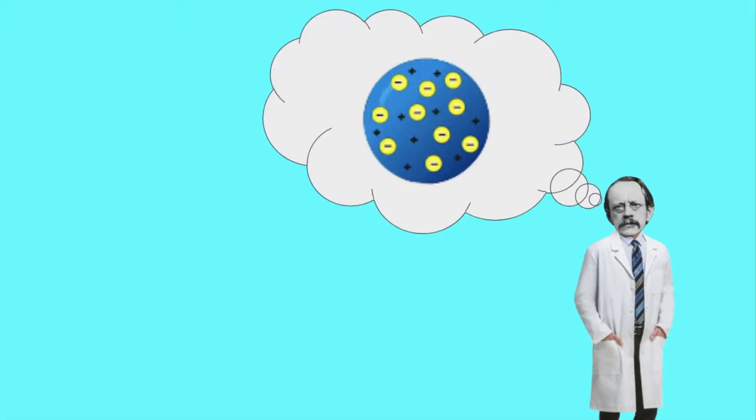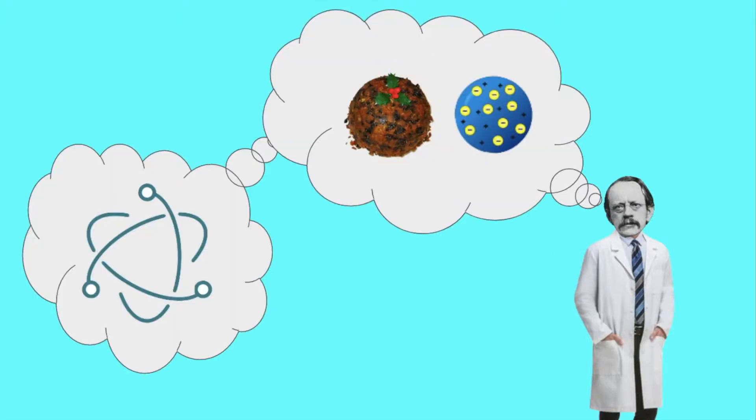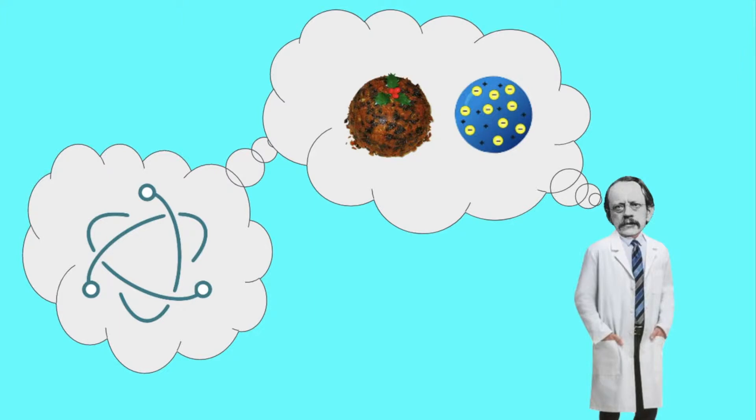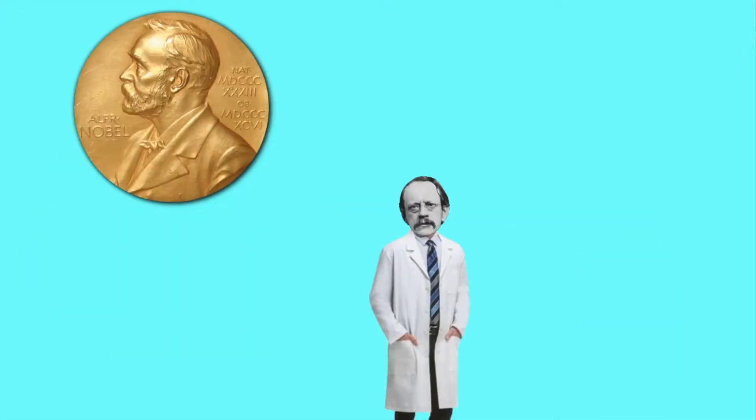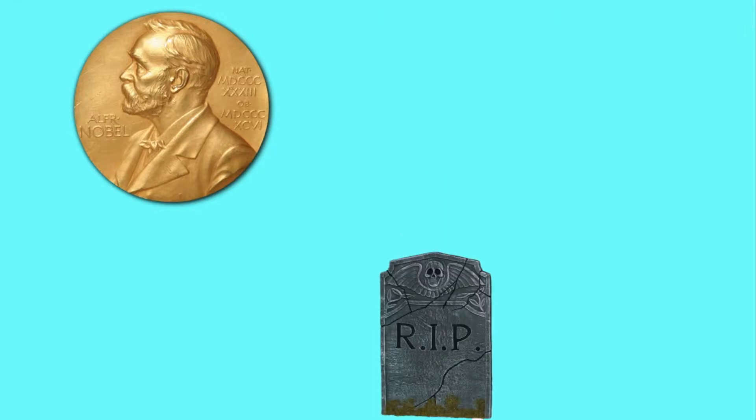He first proposed the Plum Pudding Model in 1904, shortly after his own discovery of the electron. Moreover, Thompson's theory of the Plum Pudding Model in the early 20th century earned him a Nobel Prize. He died on August 30th of 1940.